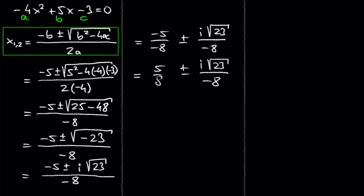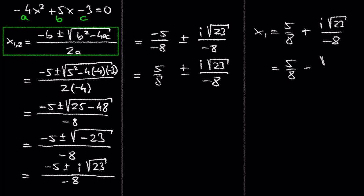The first solution is 5 over 8 plus i times the square root of 23 over negative 8, which we can also write as 5/8 minus (√23/8)i.